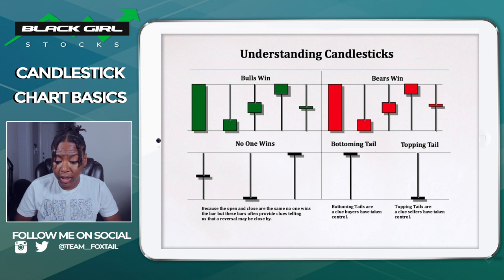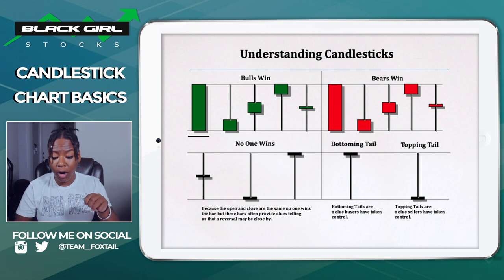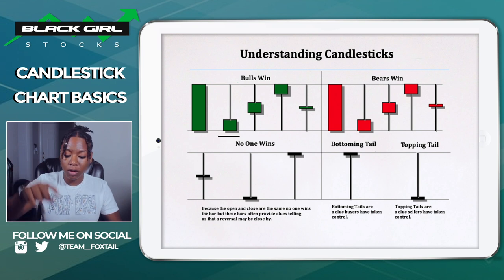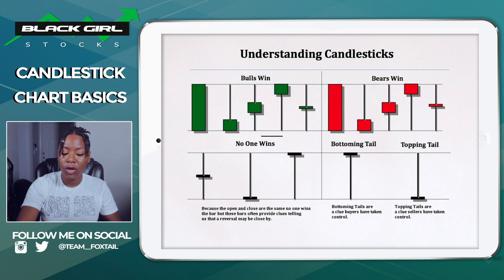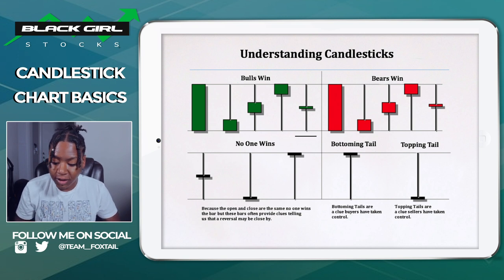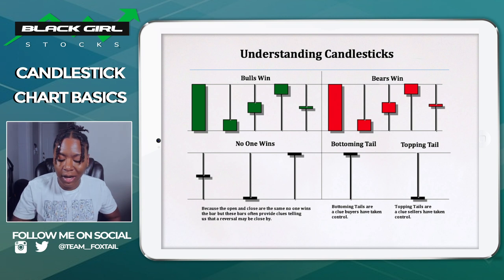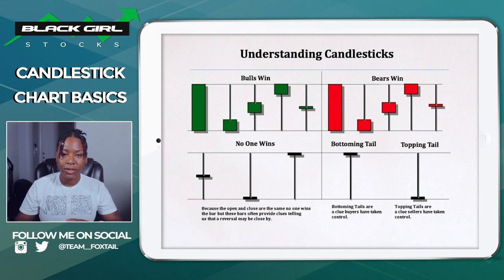Bullish candles show an uptrend and bearish candles show a downtrend. There are different types of candles — looking at the bullish ones: you have one full bar, one with a long upper wick and none on the bottom, and then the hammer, which is considered really good. The hammer has one really long wick sticking out of the bottom, meaning the stock closed very close to its highest point. You can also have a candle with a very thin body and very long wicks on both ends.